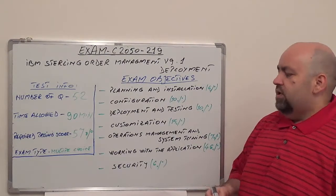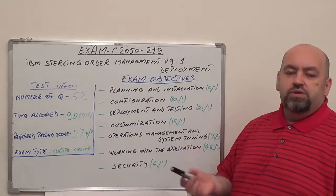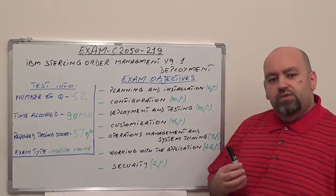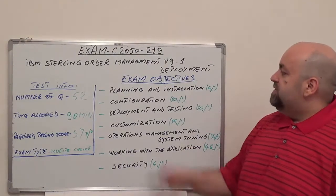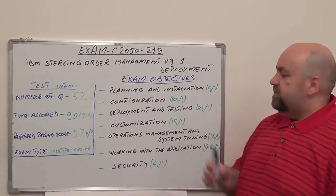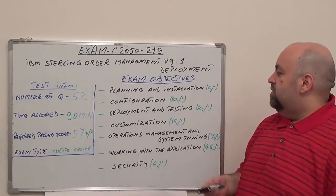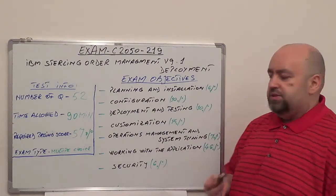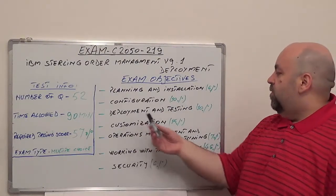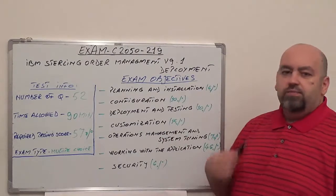On this exam, we're going to have seven sections. I'm going to present each section one by one. So let's begin with the first one. The first one is Planning and Installation with 6% of total questions. The second one is Configuration with 10% of total questions. The third one is Deployment and Testing with 10% of total questions.